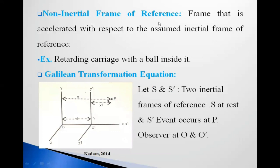A non-inertial frame of reference is one that is accelerated with respect to an assumed inertial frame of reference — for example, a retarding carriage with a ball inside it. If the carriage is at rest or in uniform motion, the ball will remain at rest. But if the carriage retards, the ball will change its position without application of external force, which is a violation of Newton's first law of motion — the law of inertia. So in this case, it is a non-inertial frame of reference.